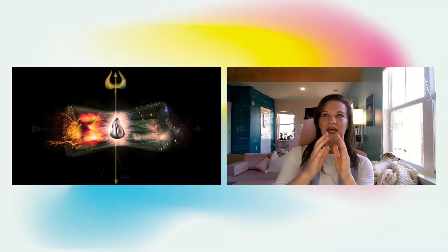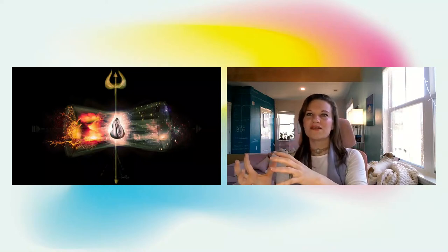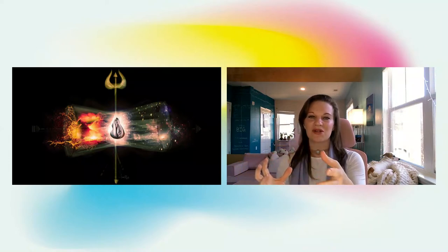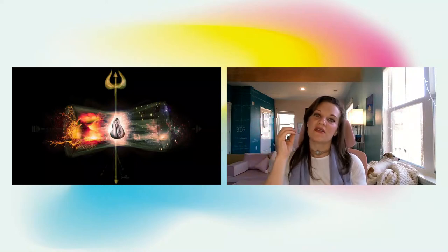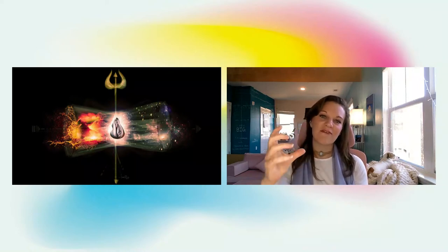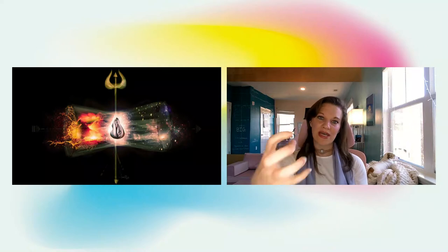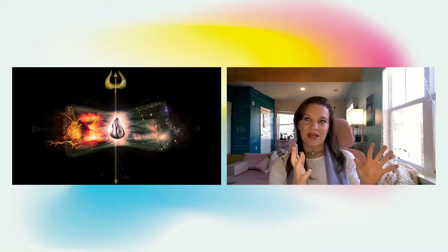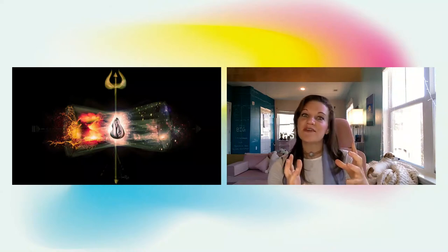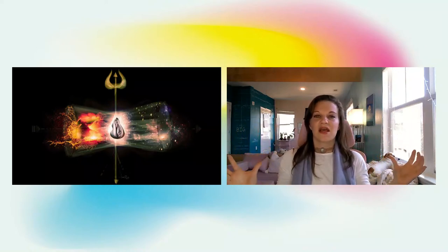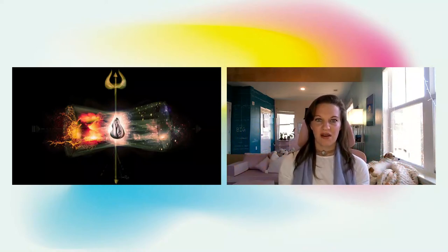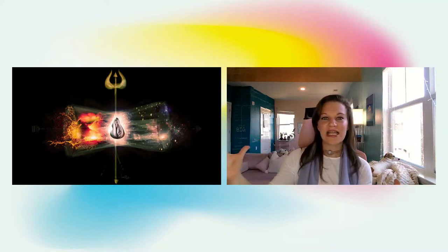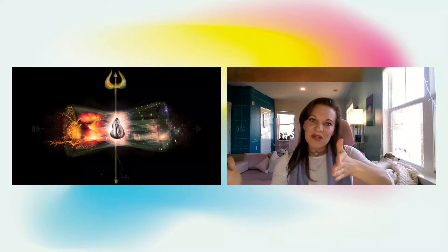Going back to the Shakti-Shiva energy — in this picture, the red side is representative of Shakti energy. Shakti is that creative life force energy; it is creation. On the opposite side, we see a galaxy-looking picture, the darker version, and that's representative of Shiva. Shiva represents oblivion, destruction, death. Shakti: life. Shiva: death. And in the middle is this trishul — the trident.